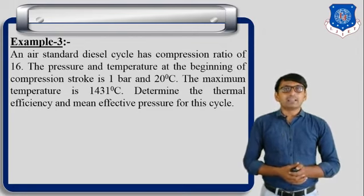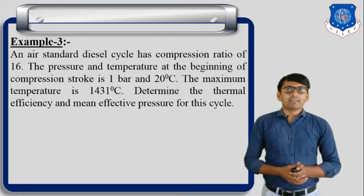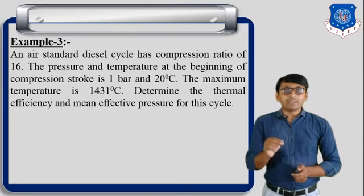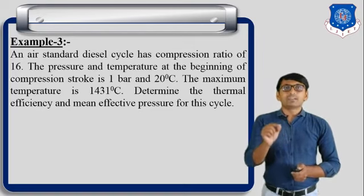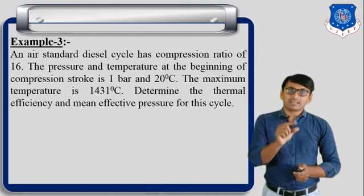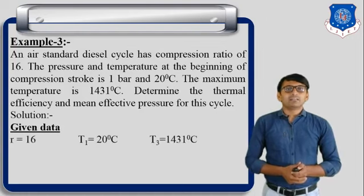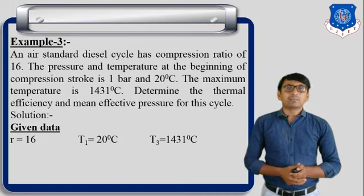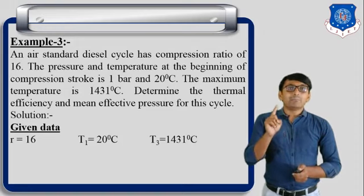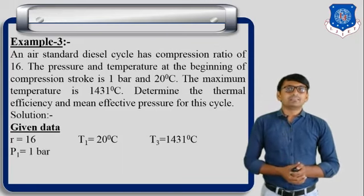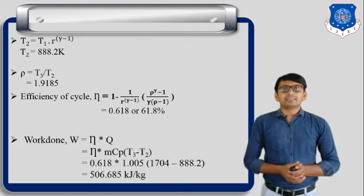In an air standard diesel cycle, compression ratio is 16. The pressure and temperature at the beginning of the compression stroke are 1 bar and 20 degree Celsius. The maximum temperature is 1431 degree Celsius. Calculate the efficiency and mean effective pressure of the cycle. Here T1 is the minimum temperature, T3 is the maximum temperature, and P1 equals 1 bar.